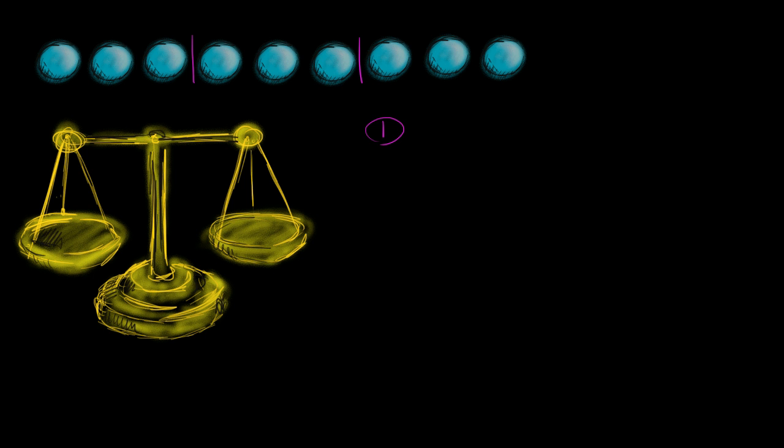We take two of those groups of three. We can take this group of three right over here, put those three balls on that side of the scale. And then we could take these three balls and put them on that side of the scale. So you're essentially weighing three versus three balls.